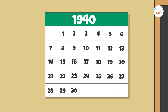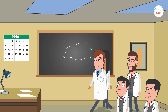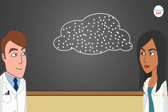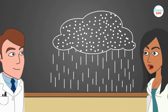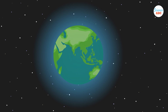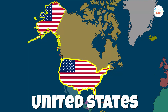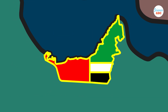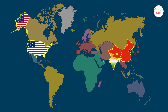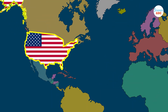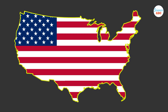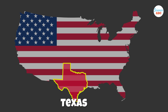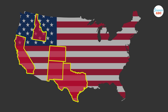The idea of cloud seeding was first introduced in the 1940s, when laboratory experiments showed that water in clouds could be artificially induced using a seeding agent, such as silver iodide. Several countries around the globe, including the United States, India, China, and the United Arab Emirates, have conducted research on cloud seeding. As of 2024, multiple states in the U.S., including California, Colorado, Idaho, New Mexico, and Texas, have active cloud seeding programs.